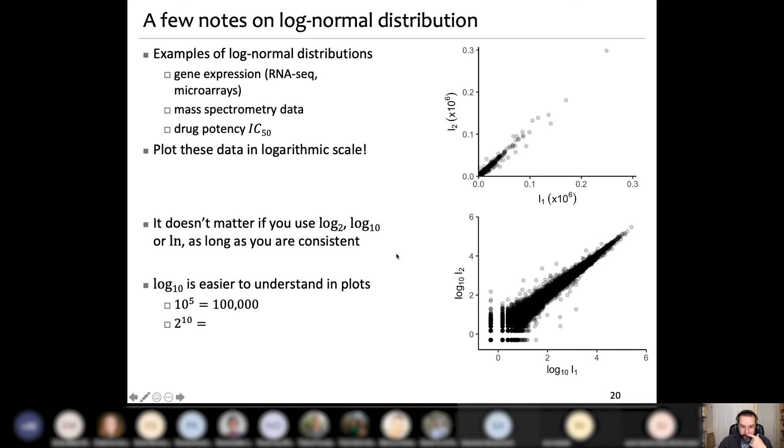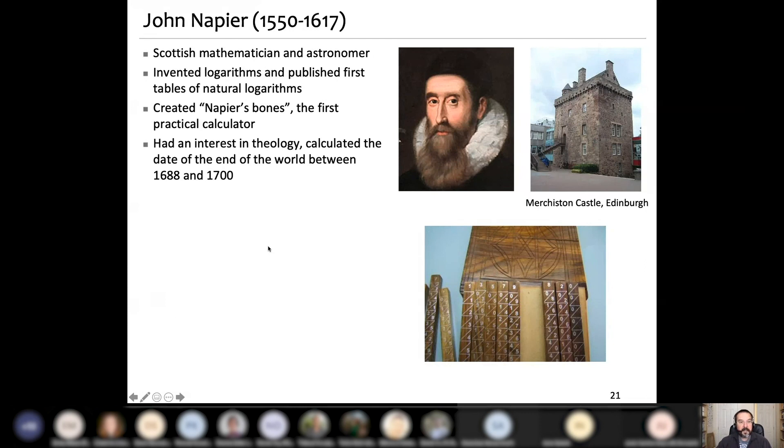So when you have data that are log normally distributed, you should plot it in a logarithmic scale. And it doesn't matter whether you use logarithm to base 2, 10 or natural logarithm as long as we are consistent. However, it's worth for presentation using log base 10 for a simple reason because it's easy to interpret. If you see 5, this is log 4, 5 would be here. You immediately know that 5 corresponds to 100,000. But if we did it in a log 2 scale, then for example, 10 would correspond to what? Anybody knows on top of the head? Well, it's 1024. So log 2 scale is not that easy to interpret as log 10 scale.